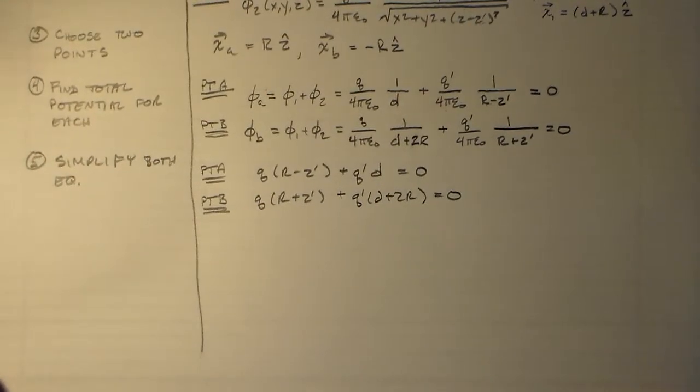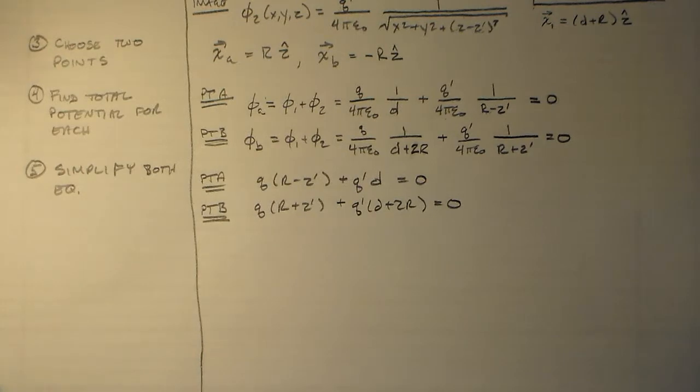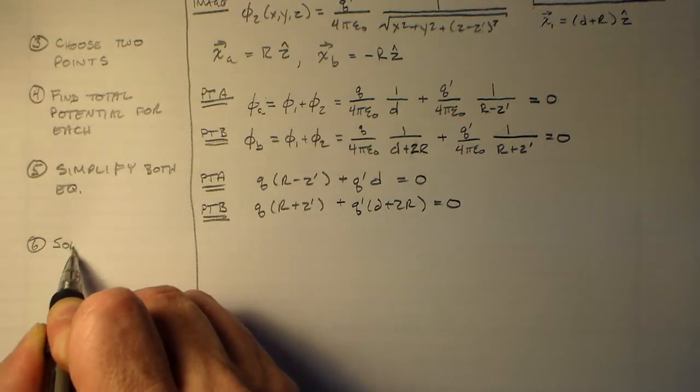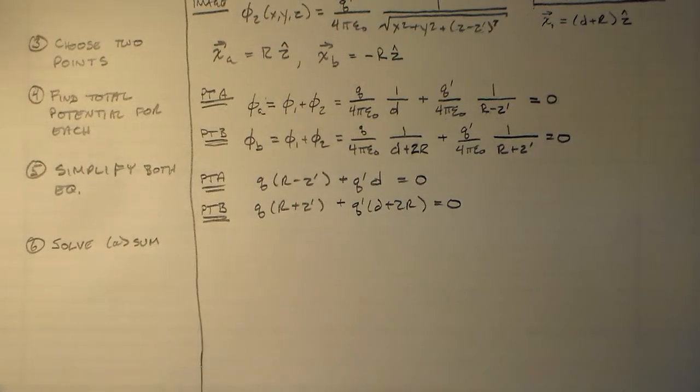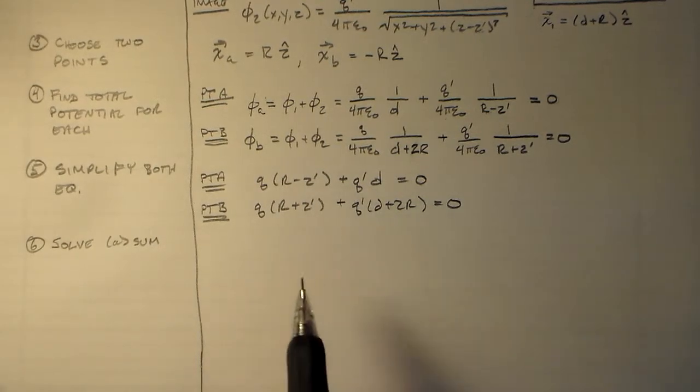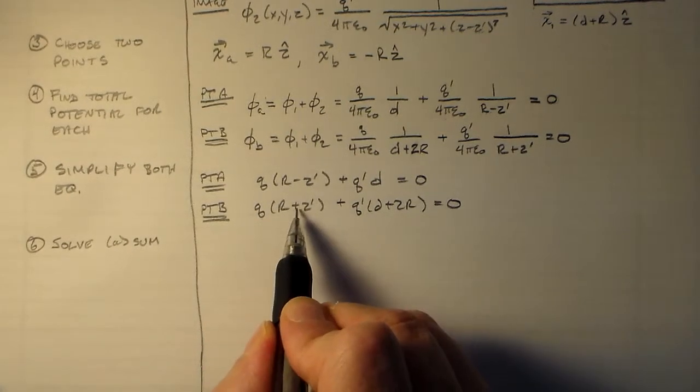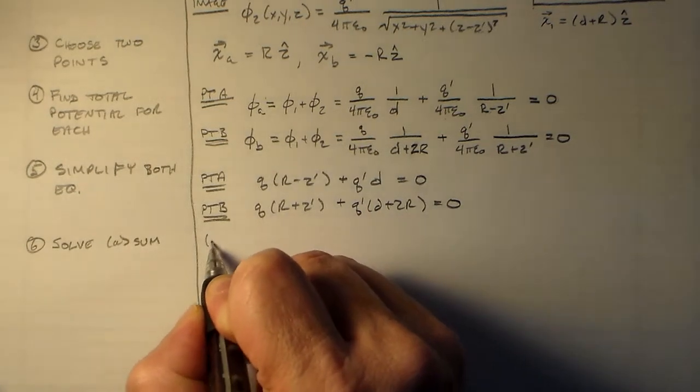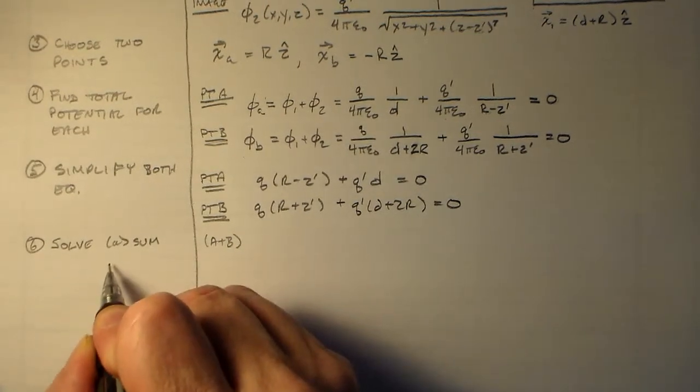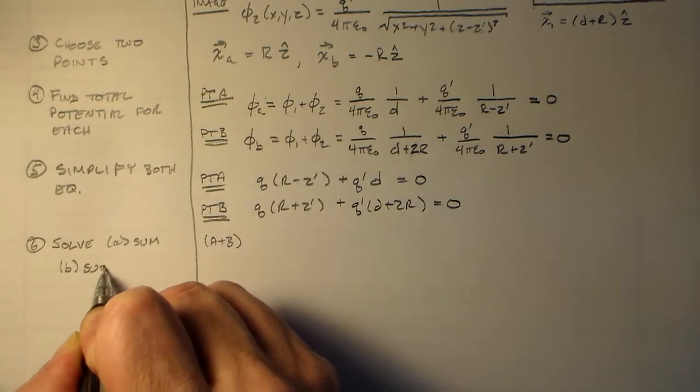So point b, we have phi b equals phi 1 plus phi 2, except now we have minus r here. So instead of d sitting down here, we have d plus 2r. The distance is d plus r plus r, d plus 2r, plus q prime over 4 pi epsilon naught. And now we have minus r minus z prime, which is squared, and then we take the square root. So that's just the absolute value of that, which is r plus z prime. Everything's fine. And actually, this is the absolute value of the previous thing. But obviously, this is positive, this is positive, this is positive. We don't have to worry about whether or not where the absolute value sign comes from. Because this z prime is somewhere in here, so it's somewhere inside the sphere, so r has to be larger than z prime.